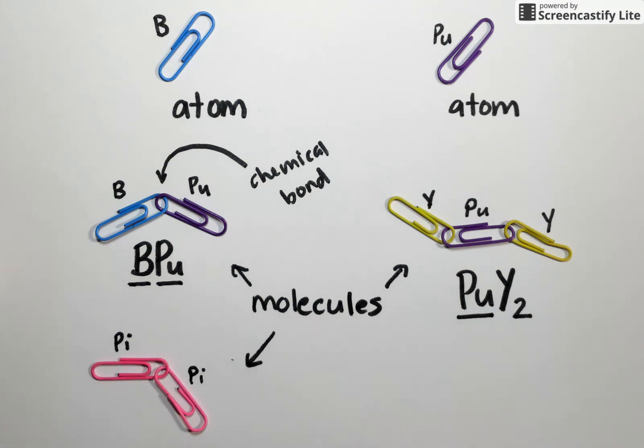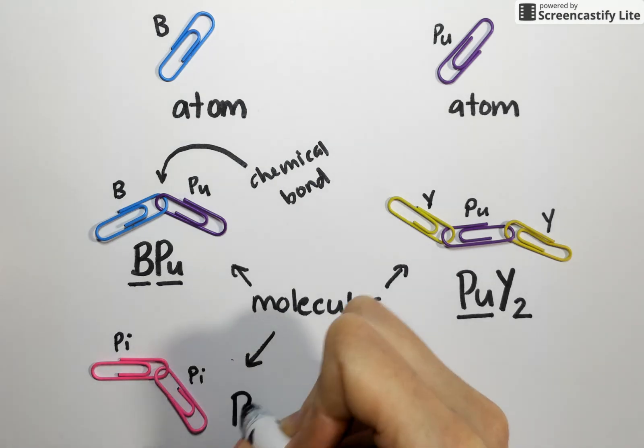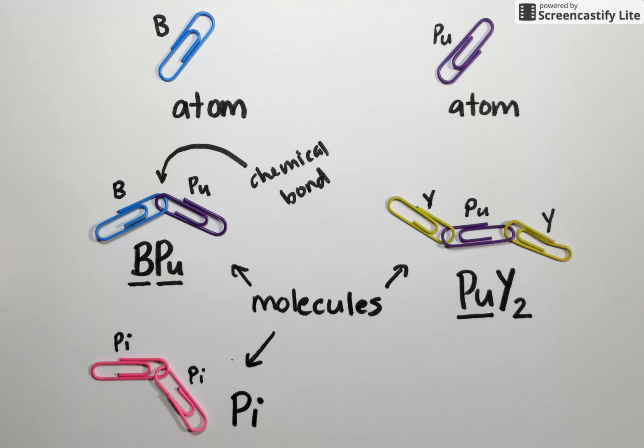We can use that same logic down here. This molecule looks unique because it doesn't link together two different atoms. It links together two of the same PI atoms. We can show that in the chemical formula by saying we only have the element PI. However, there are two of them and that's what that lower subscript 2 is going to show us.